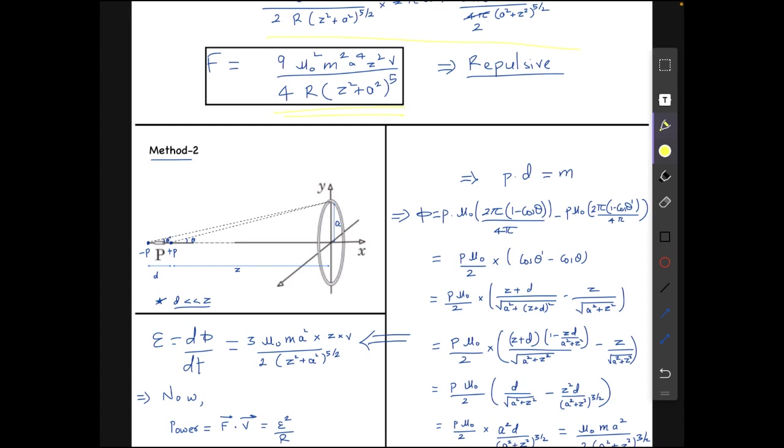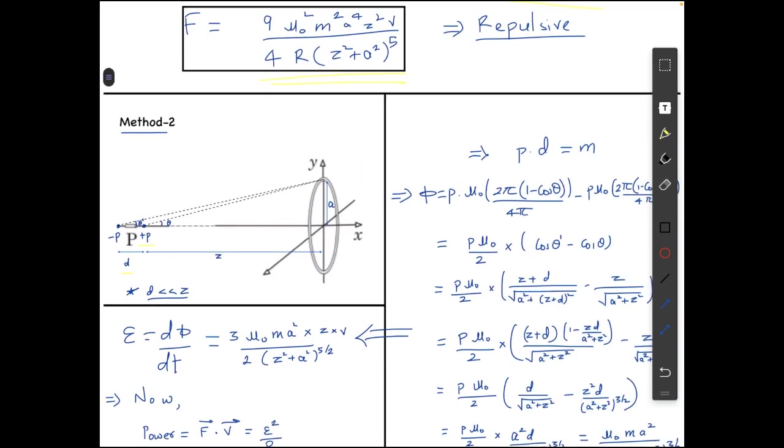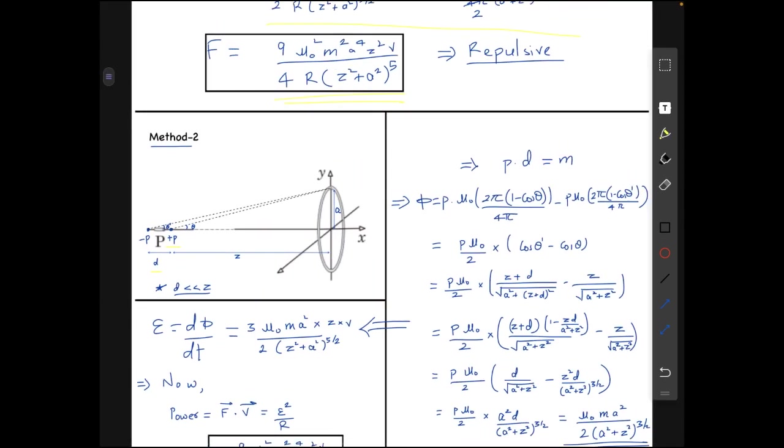Here we assume that the magnetic monopole strength of the dipole is P and the distance of the dipole is D. From here what we get is first of all PD equals to M where M is the dipole strength.